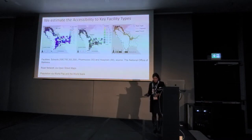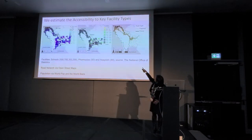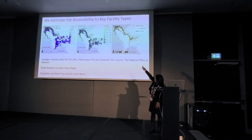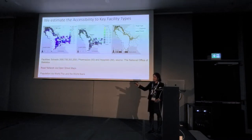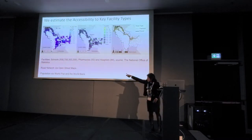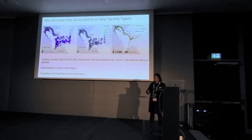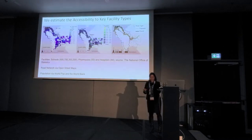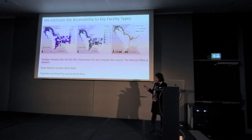The innovation comes when we incorporate another layer: the facilities — critical facilities such as schools, pharmacies, and hospitals. There are about one million people, with only 44 hospitals and 50 pharmacies, and 200 high schools. When we have flooding in the country, it's important to see when access to these places is closed.